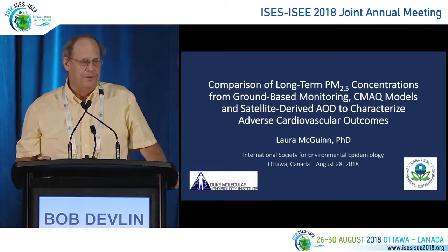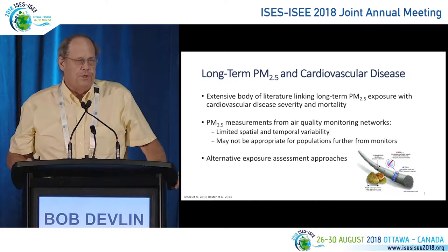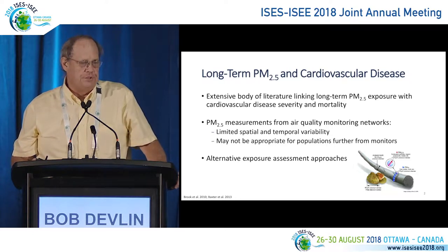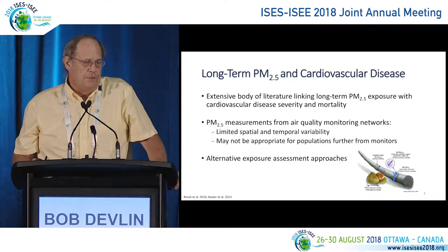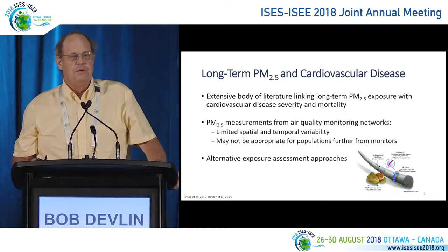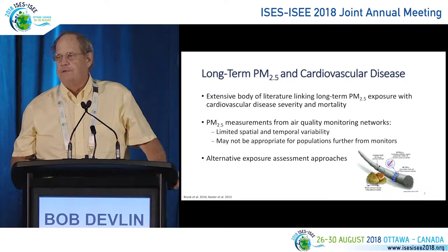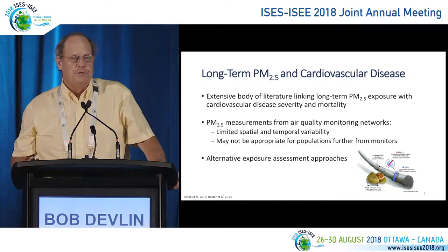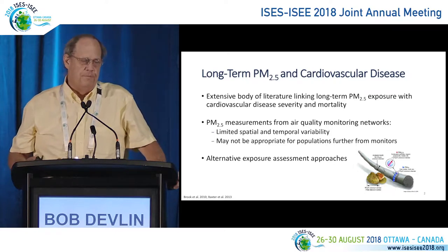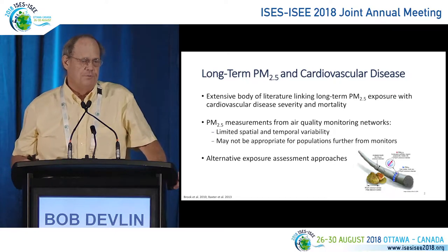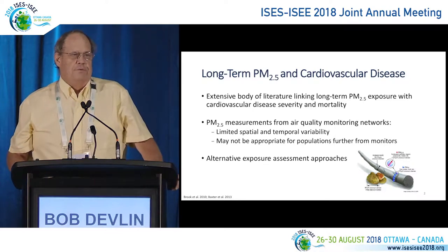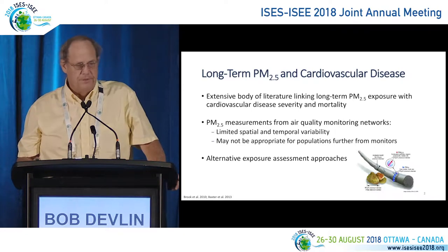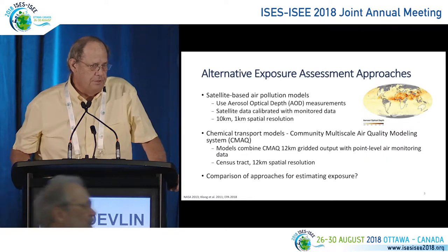The goal of Laura's talk was to take the various models that you've heard earlier in this session and to compare them in a single cohort of individuals — to compare and contrast the effects. Some of the models were high resolution spatially, some are low resolution, some are simpler, some are more complex, some are chemical transport, some are satellite-based. Does it matter if you're doing an epidemiology study? What kinds of effects might you get with some of these various models?